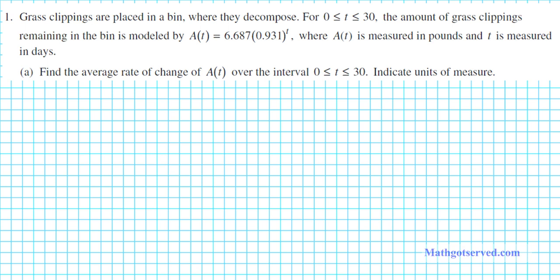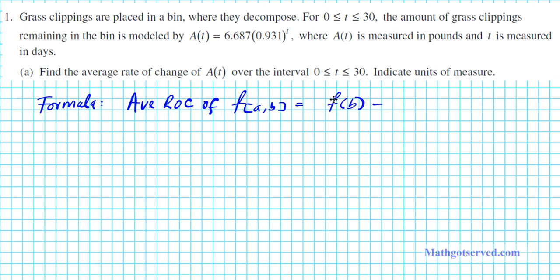Let's write down the formula first. The average rate of change of a function f on an interval [a, b] is [f(b) − f(a)] / (b − a), which is basically the slope of the secant line. That's what the average rate of change is.